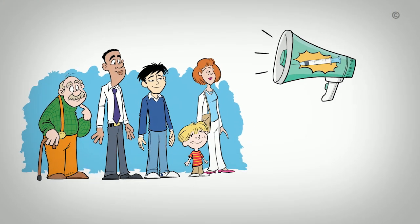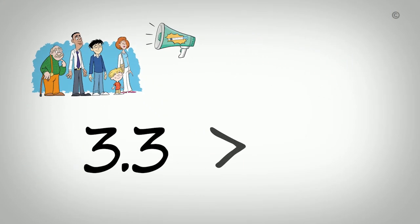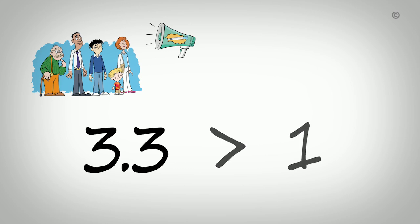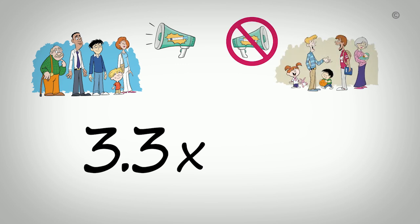An odds ratio of 1 means the intervention makes no difference in the odds of getting the flu shot, while an OR greater than 1 means people encouraged to get the flu shot were more likely to get the shot than those who were not. An OR of less than 1 means that those encouraged to get the flu shot were less likely to get the shot than those who were not. In our example, an OR of 3.3 is greater than 1, meaning those in the intervention group had an odds of getting the flu shot over 3 times more than those not receiving the intervention.